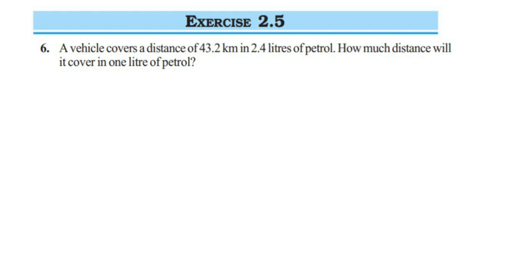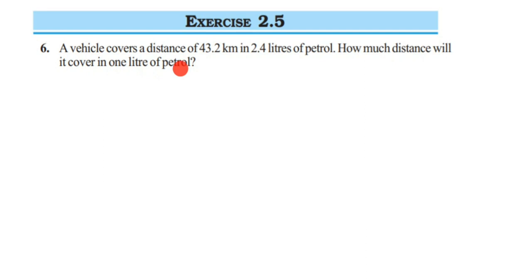Hello everyone. Here I am doing exercise 2.5, sixth question — fractions and decimals of class 7. The question is: a vehicle covers a distance of 43.2 kilometers in 2.4 liters of petrol. How much distance will it cover in one liter of petrol? They have given that a vehicle covers 43.2 kilometers for 2.4 liters of petrol. We have to find out for one liter how much distance it will cover.